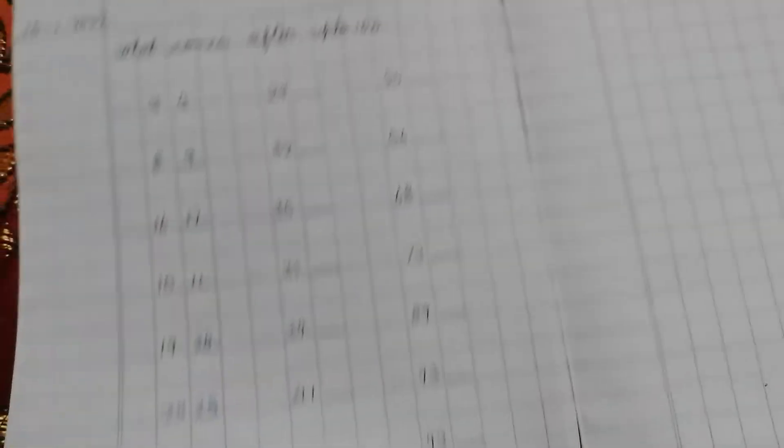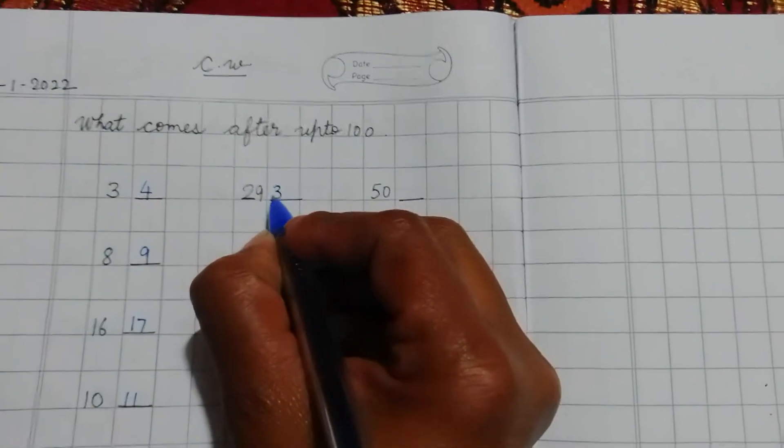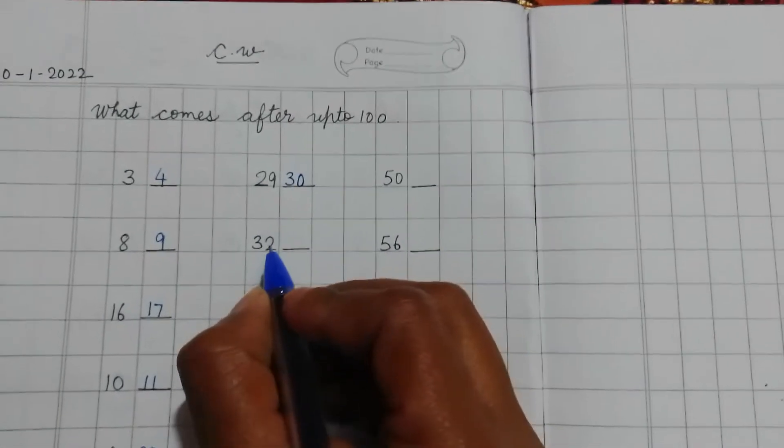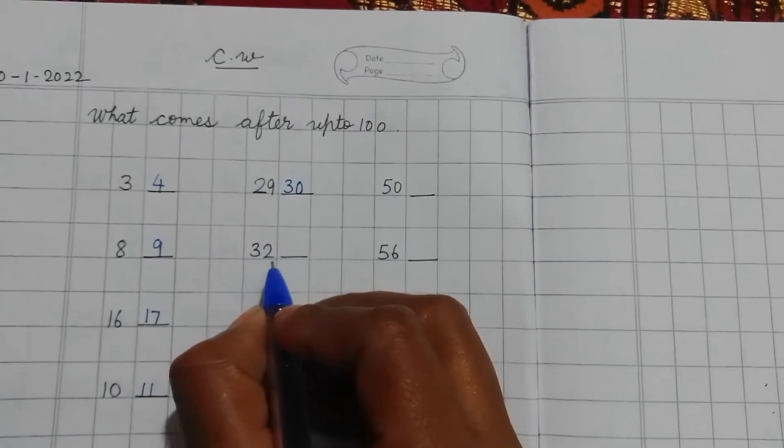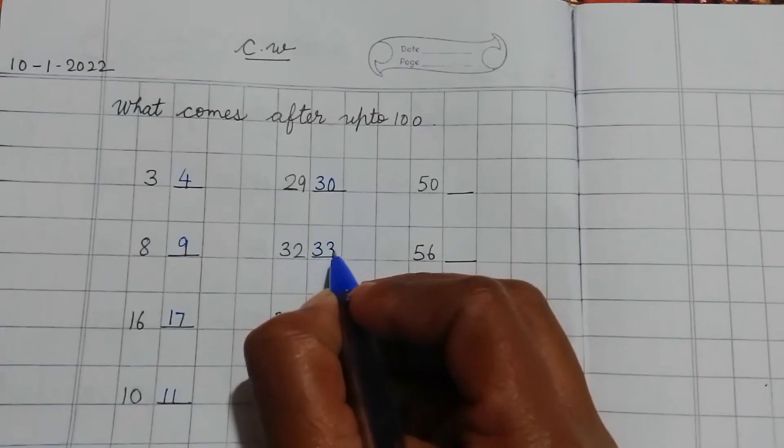Now next sign. 29. So 30. Now what is 32. So next number will come? 33.